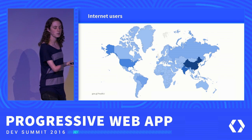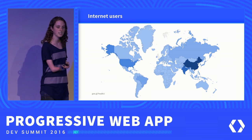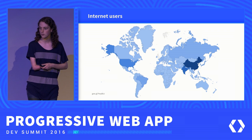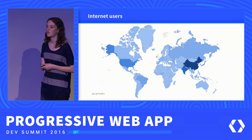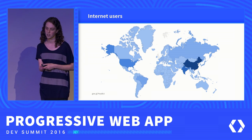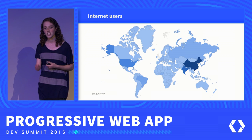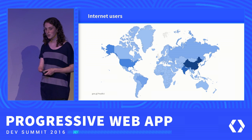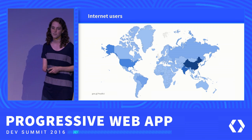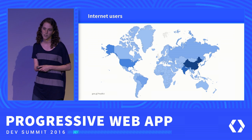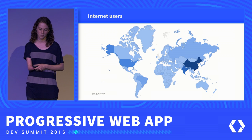The US has about 286 million internet users, India has 462 million internet users, and China actually has almost as much as the two of these combined, with around 721 million internet users.